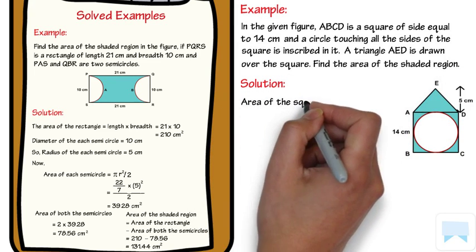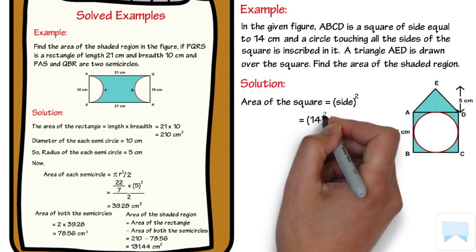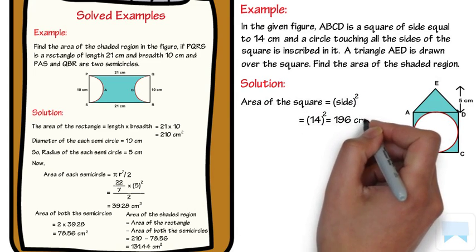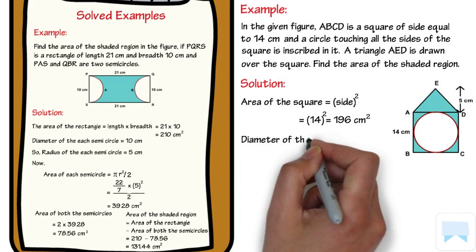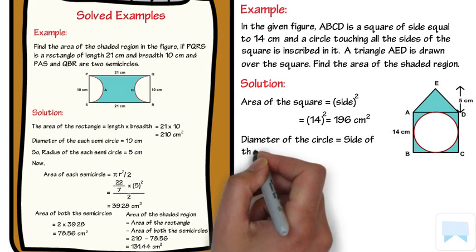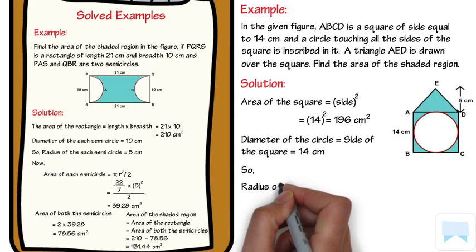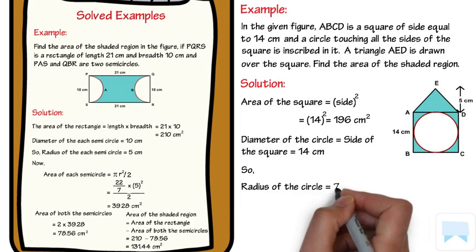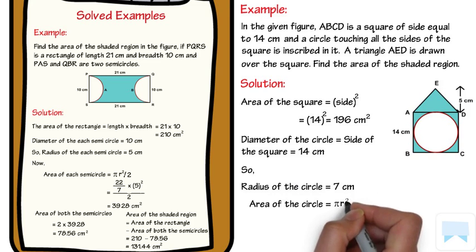Area of the square is equal to side², which is 14², equal to 196 cm². Diameter of the circle is equal to the side of the square, which is 14 cm, so the radius of the circle is equal to 7 cm.